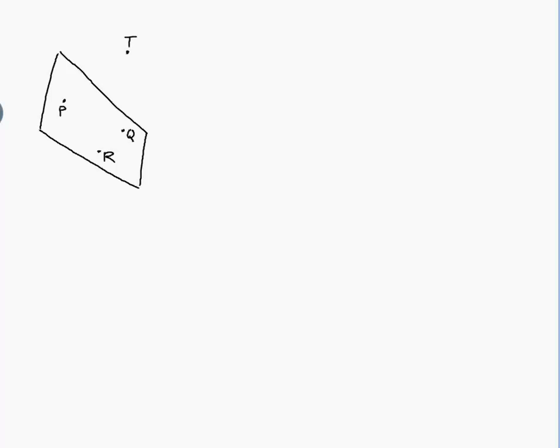So, here's T(0,2,3) and I want a line through T which is normal to the plane. Normal means perpendicular to, so I want this line that's perpendicular to my plane, like that.